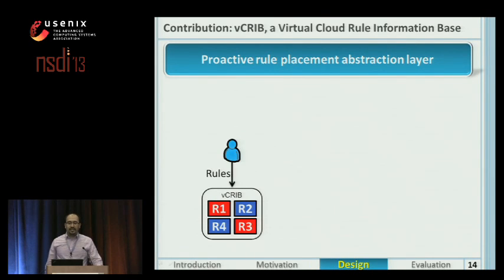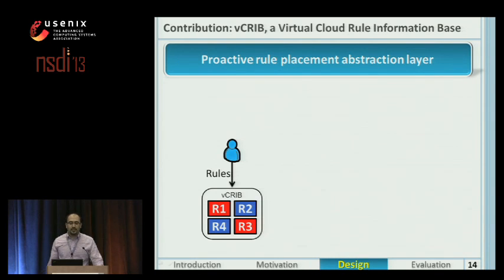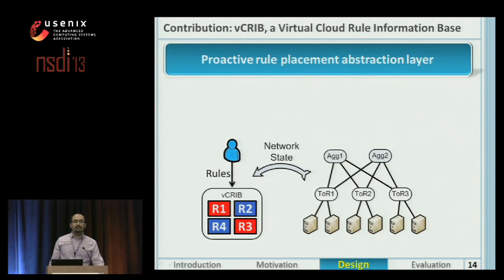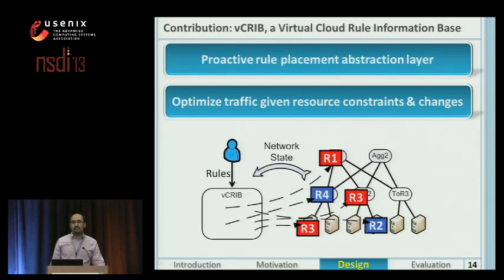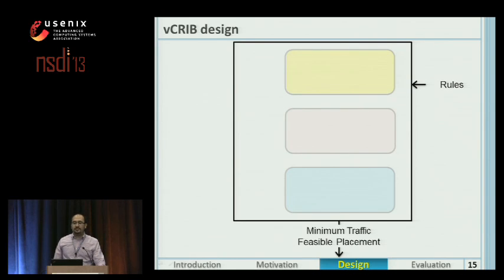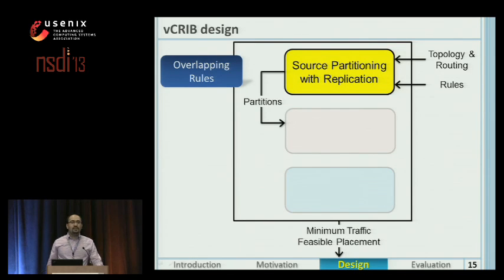In this work, we propose VCRIP — a Virtual Cloud Rule Information Base. VCRIP provides a rule placement abstraction layer for the operators to define rules without worrying about rule placement and resource constraints in the network. It gathers information about network resources and traffic and places the rules both on hypervisors and switches to optimize traffic given the resource constraints and changes. So VCRIP receives rules and generates a minimum traffic feasible placement. To handle overlapping rules, we propose a partitioning scheme, where partitions play the role of an independent chunk of rules that can be placed anywhere in the network without changing the semantic of overlapping rules.